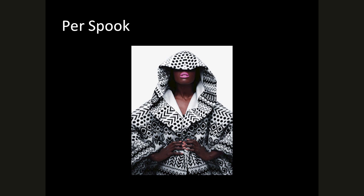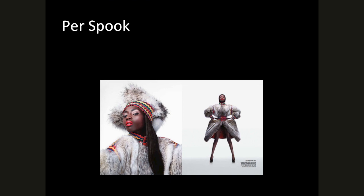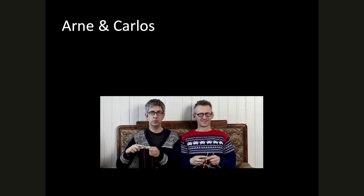Fashion designer Per Spook did a decontextualization of Norwegian traditional materials, bringing them into couture — he had his own fashion house opened in Paris in 1977, lasting until 1995. More recently, the duo Arne and Carlos did the traditional Marius sweater with a twist, integrating space invader aesthetics instead of the traditional pattern. This was picked up by Comme des Garçons and produced in collaboration with them.